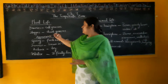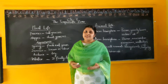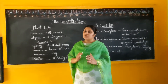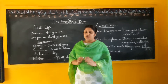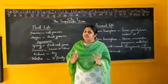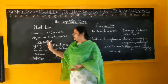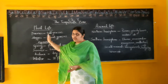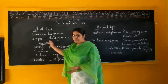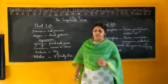But in the steppes, we can see that the grasses are short, because due to the continental type of climate, they receive very little rainfall. That is why their grasses are short. In the prairies, tall grasses grow because of sufficient rainfall, while in the steppes, short grasses grow due to less rainfall.